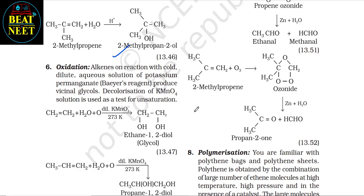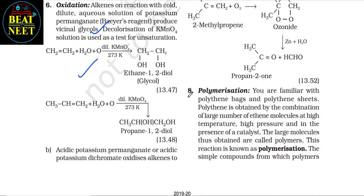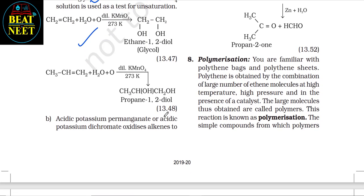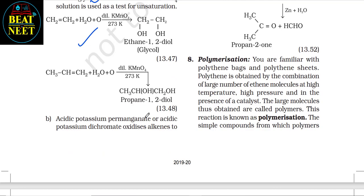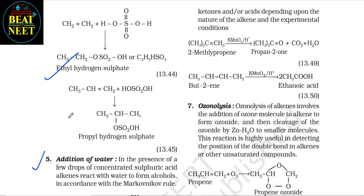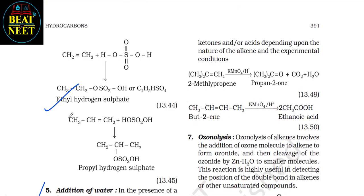Sixth — oxidation: alkenes on reaction with cold dilute aqueous solution of potassium permanganate, that is Baeyer's reagent, produce vicinal glycols. Decolorization of KMnO₄ solution is used as a test for unsaturation. You can see the formation of ethane-1,2-diol and propane-1,2-diol. Acidic potassium permanganate or acidic potassium dichromate oxidizes alkenes to ketones and/or acids depending upon the nature of the alkene and the experimental conditions.